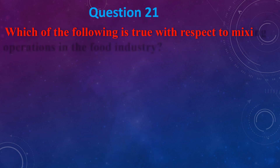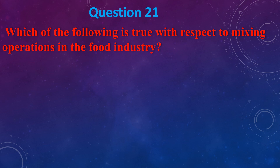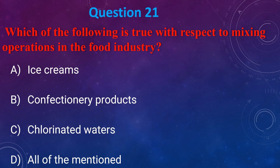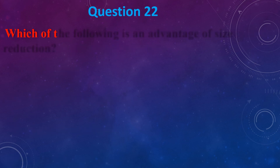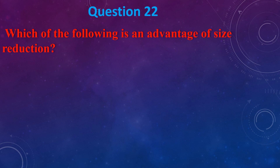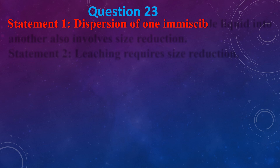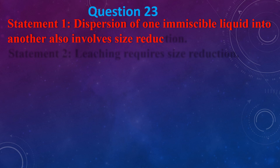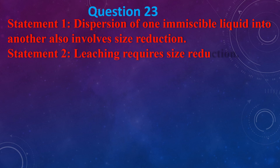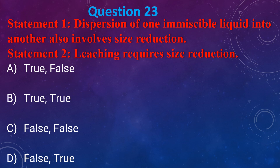Which of the following is true with respect to mixing operations in the food industry? (a) Ice cream, (b) Confectional products, (c) Chlorinated water, (d) All of the mentioned. The answer is (d) all of the mentioned. Which of the following is an advantage of size reduction? (a) Enhance heat and mass transfer, (b) Estimate contact with certain food items, (c) Enhance heat and mass transfer and estimate contact with certain food items, (d) All of the above. The answer is (c). Statement 1: Distribution of one immiscible liquid into another involves size reduction. Statement 2: Leaching requires size reduction. The answer is (b) True, True.